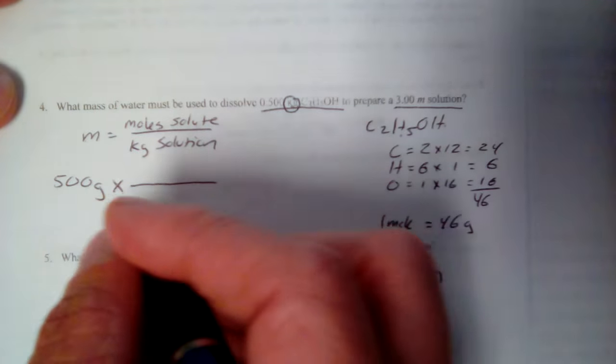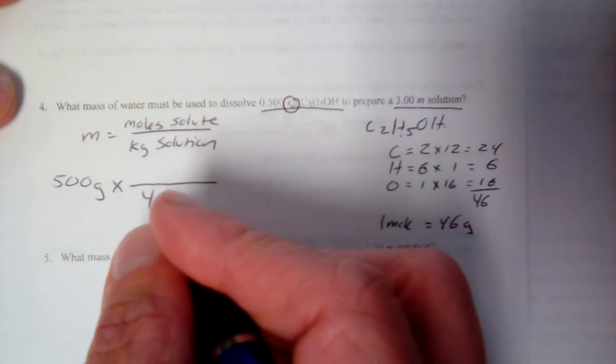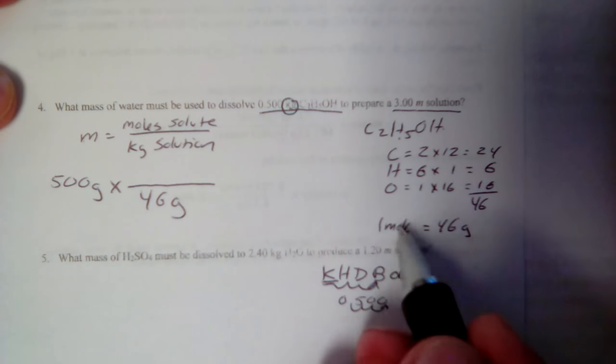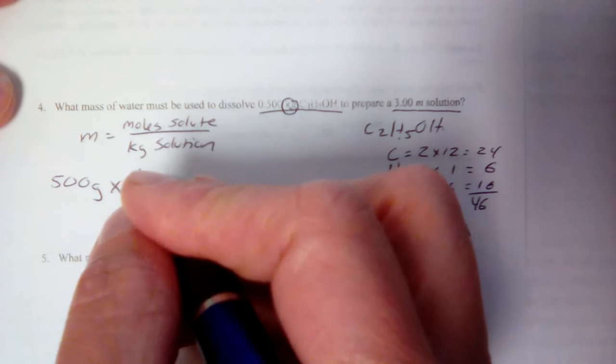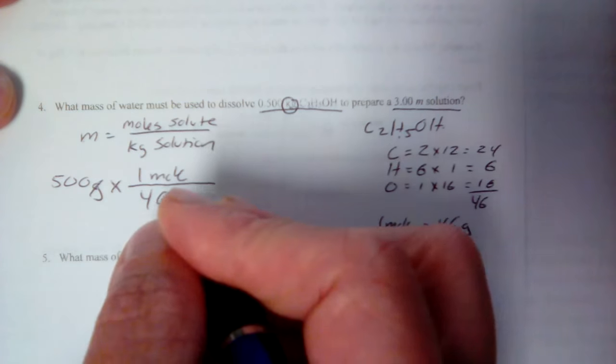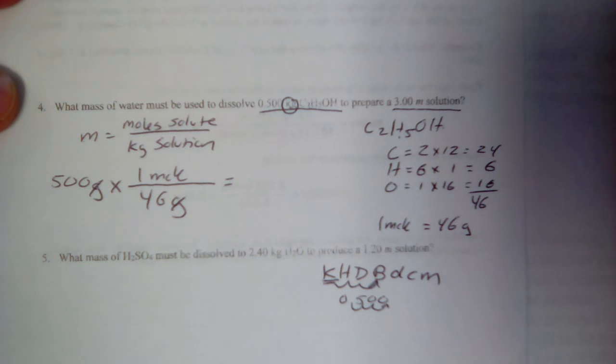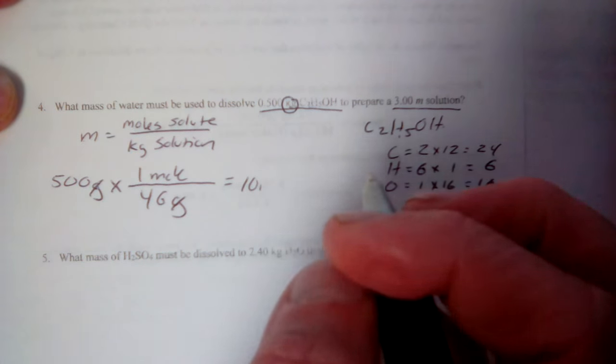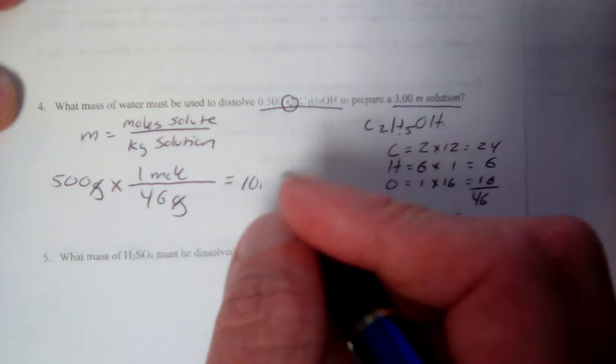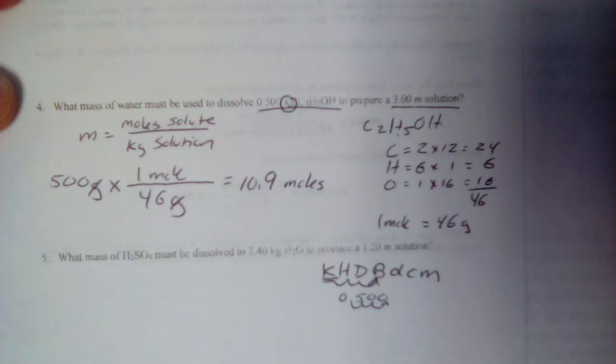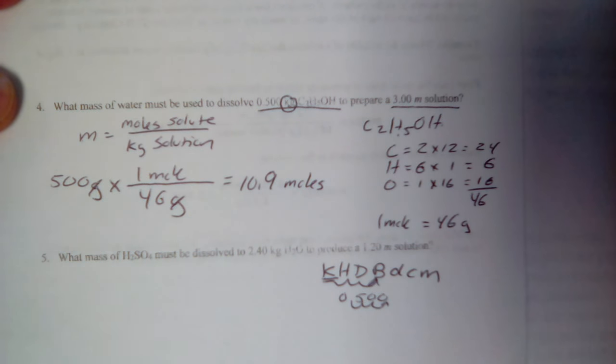Set it up. So the grams cancel. Grams here means it has to go on the bottom. Again, that's just the formula mass we calculated. And the one mole goes on top. Grams cancel. It's 500 divided by 46. That is 10.86956... Let's round it. 10.9 moles.